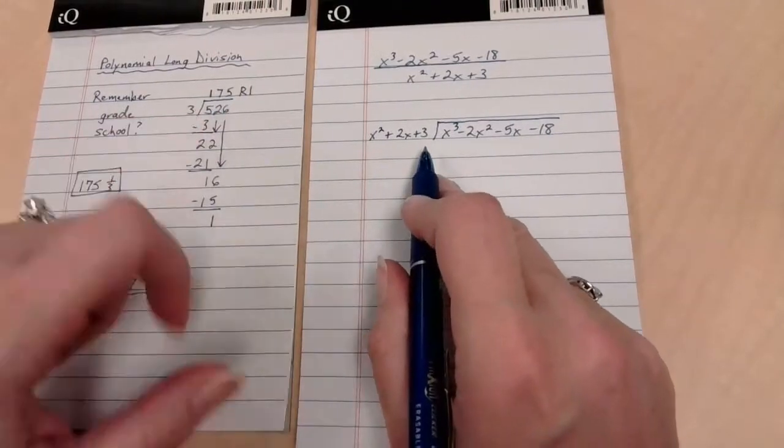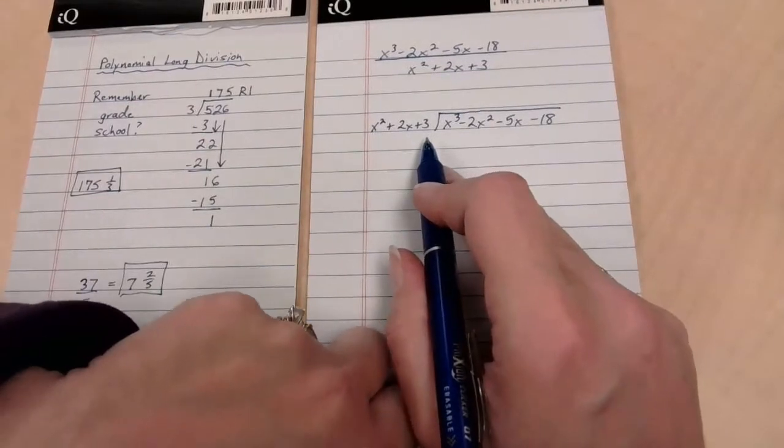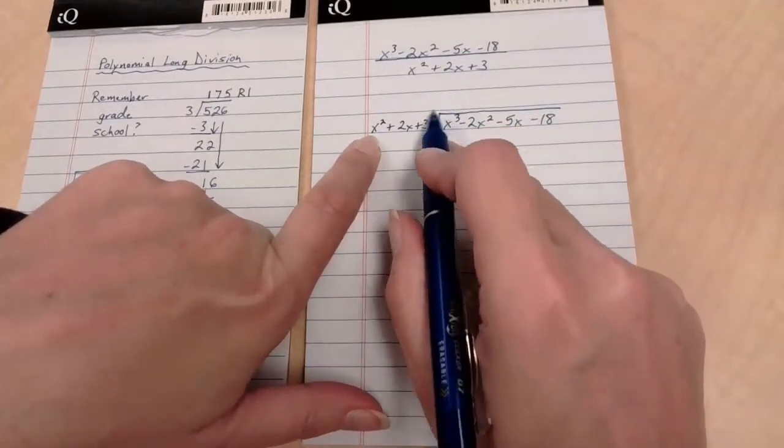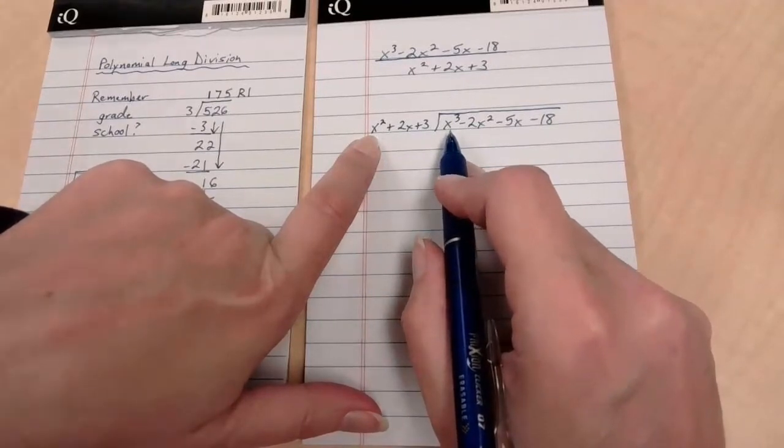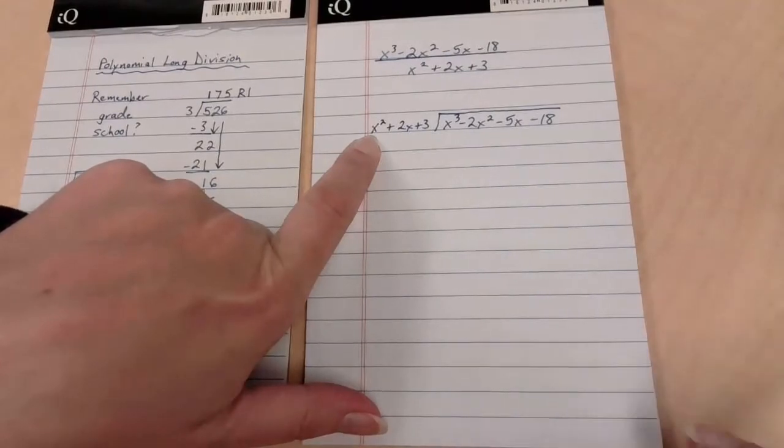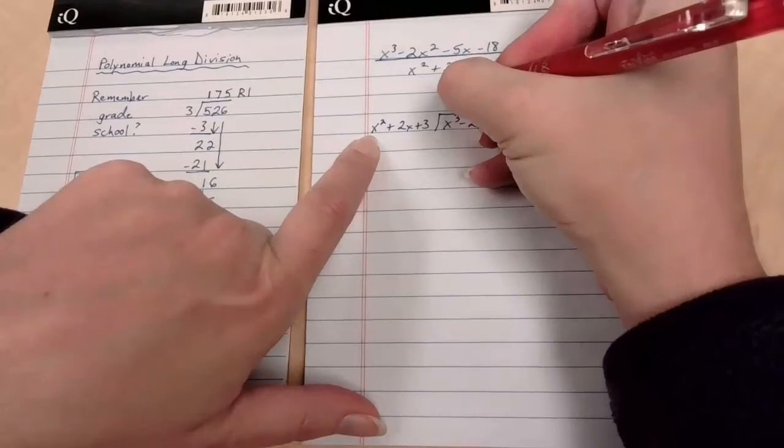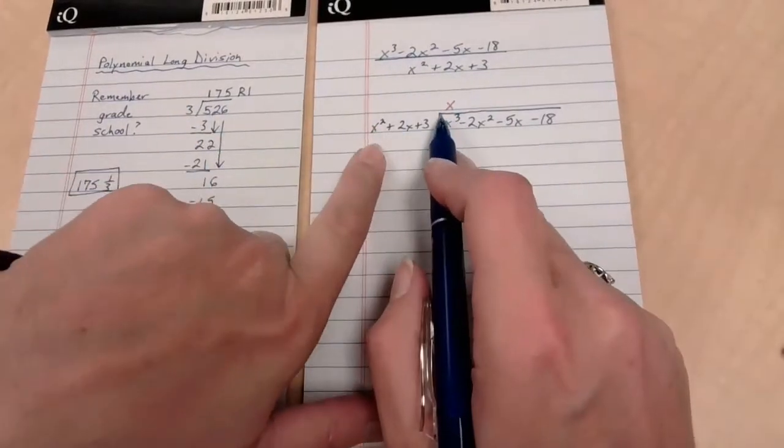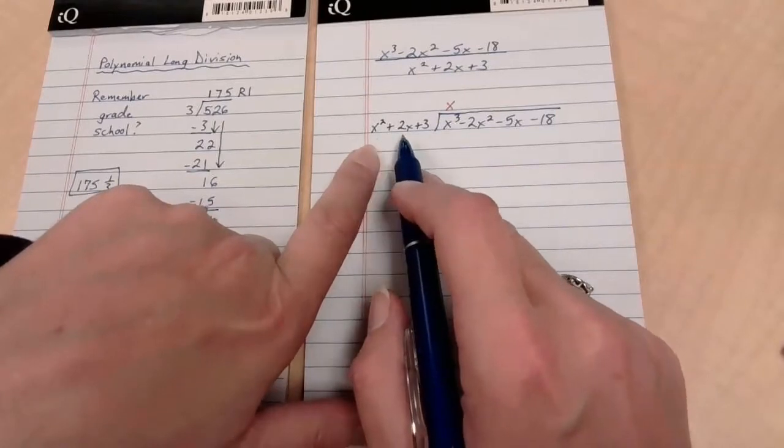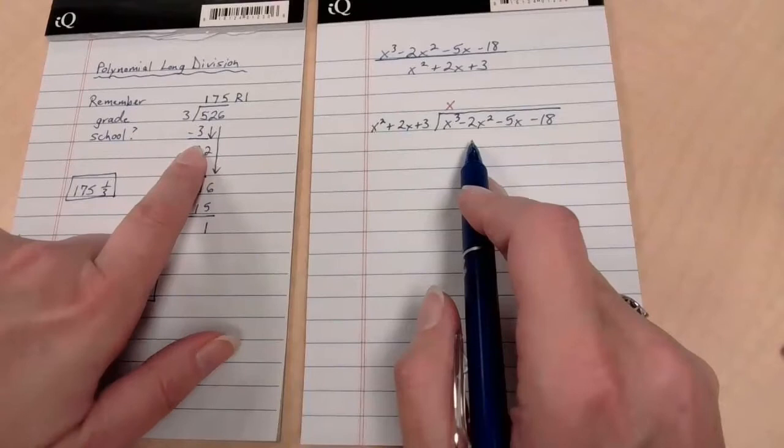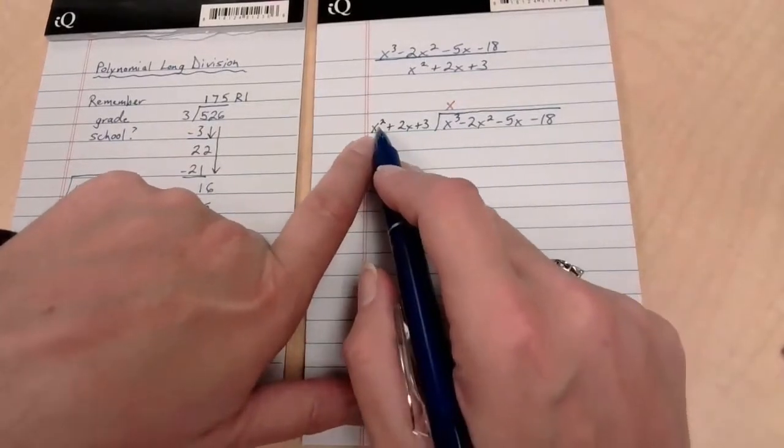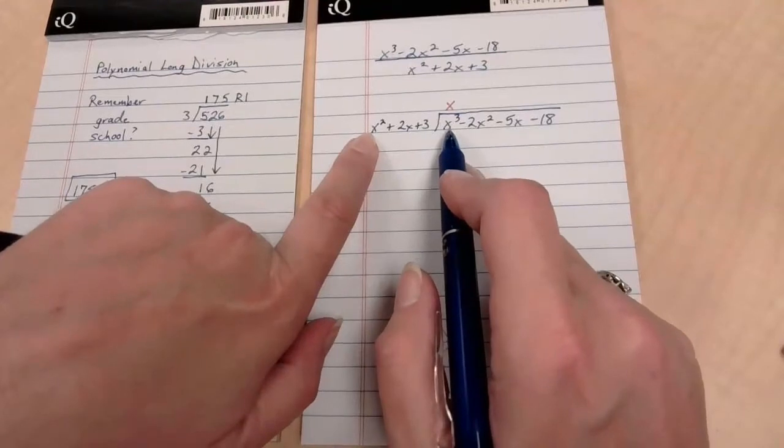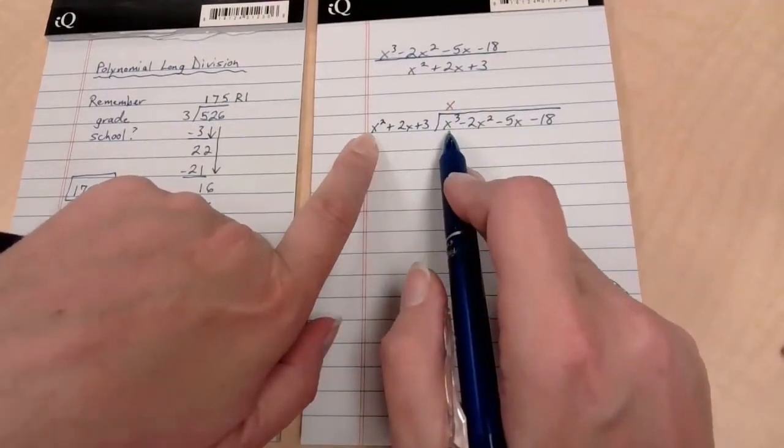This is going to be x² plus 2x plus 3, and we are dividing that into x³ minus 2x² minus 5x minus 18. This is my dividend, this is my divisor. We said first we're going to see how many times 3 goes into 5, and that was once. I need to modify our lead question for the polynomials. I'm going to focus on the x² and the x³, the first term and the first term. What would I need to multiply by x² in order to get x³?